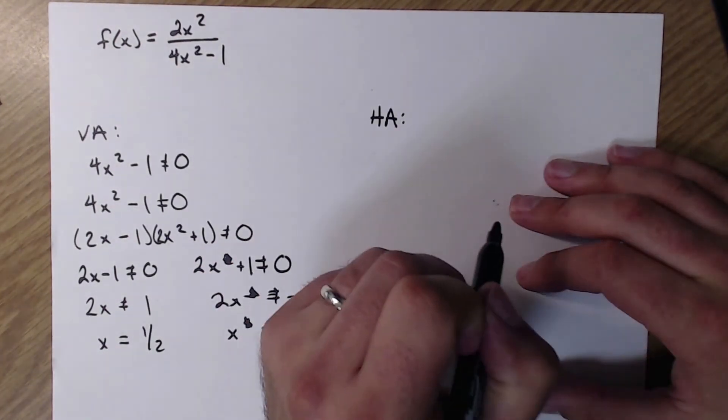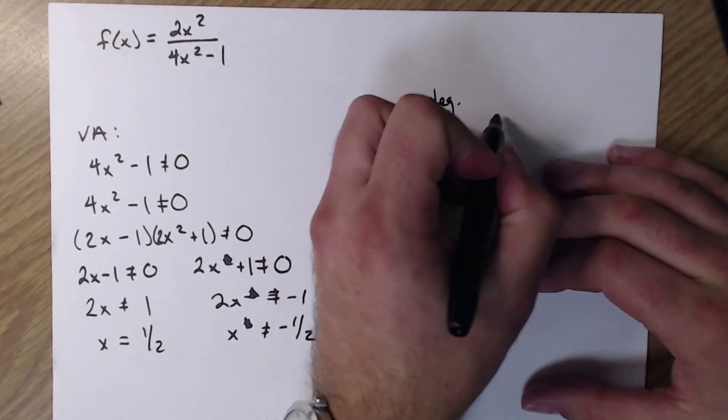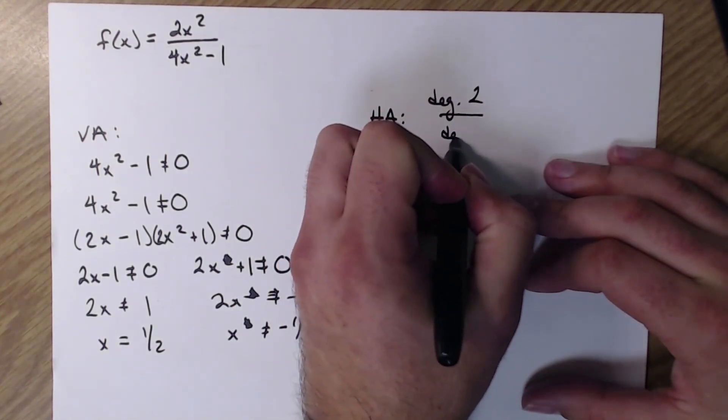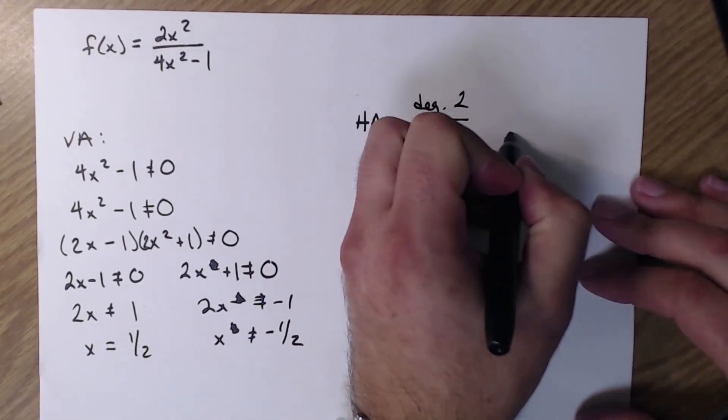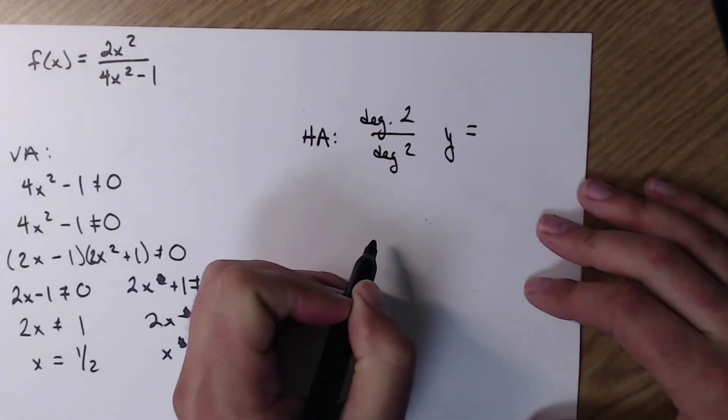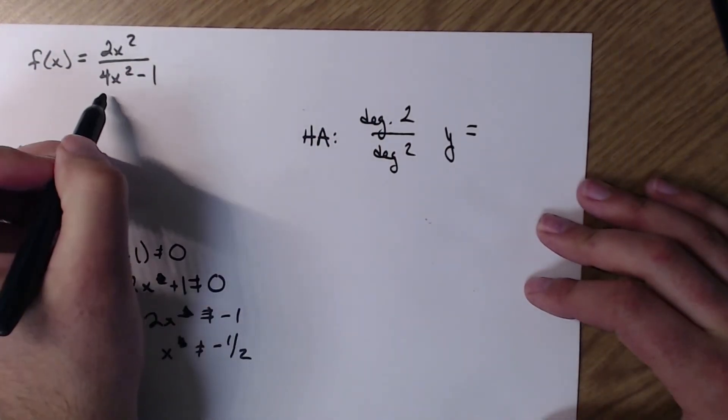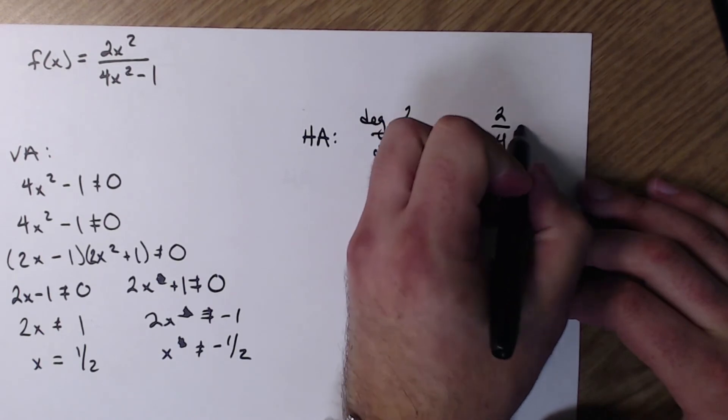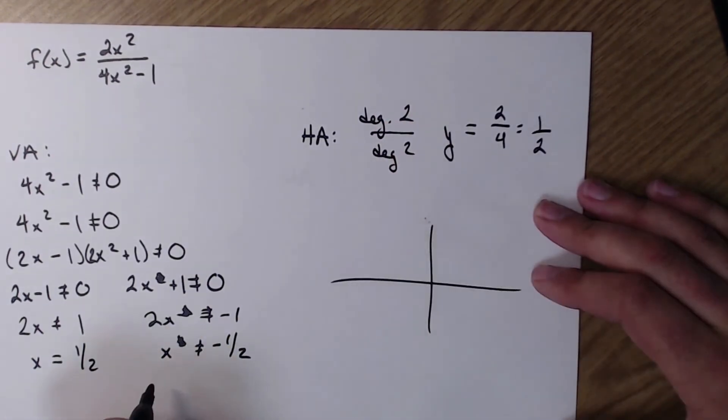Then I'm going to find my horizontals. So I'm going to look at my degree of my top is 2. Degree of my bottom is 2. So I'm just going to be y equals dividing those leading coefficients. So 2 over 4, which is a 1 half.